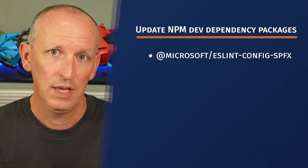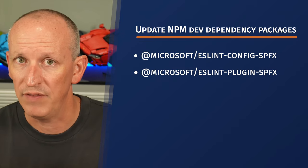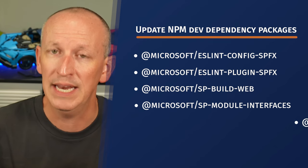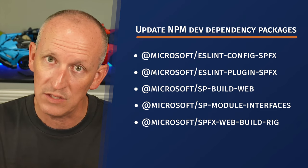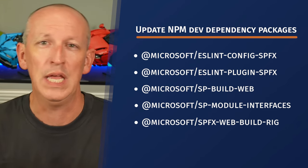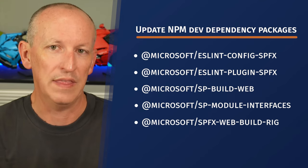If you're not ready to upgrade from SPFX 1.19 to 1.20, you can manually fix those projects to get proper errors again. First, update all SPFX-related tool packages to version 1.20.2 — this includes ESLint config SPFX, ESLint plugin SPFX, SP build web, SP module interfaces, and SPFX web build rig. Only update packages already present in your project; don't add anything new. Second, upgrade rushstack/eslint-config from version 2.5.1 to 4.0.1.